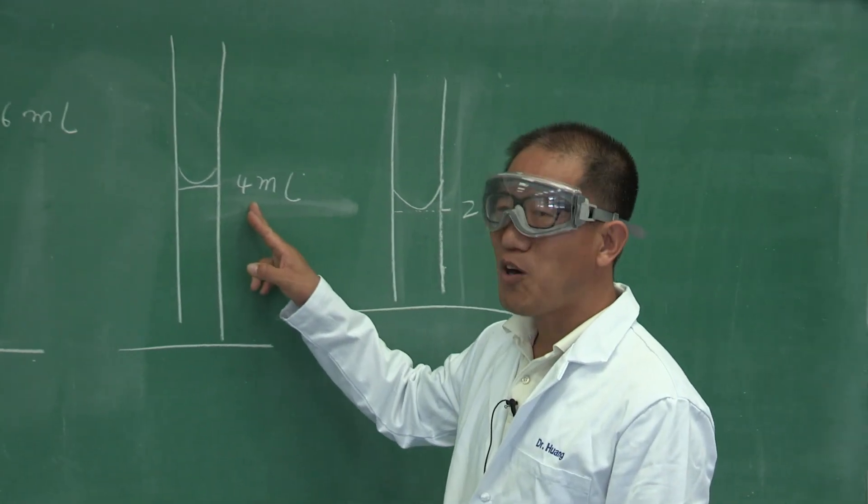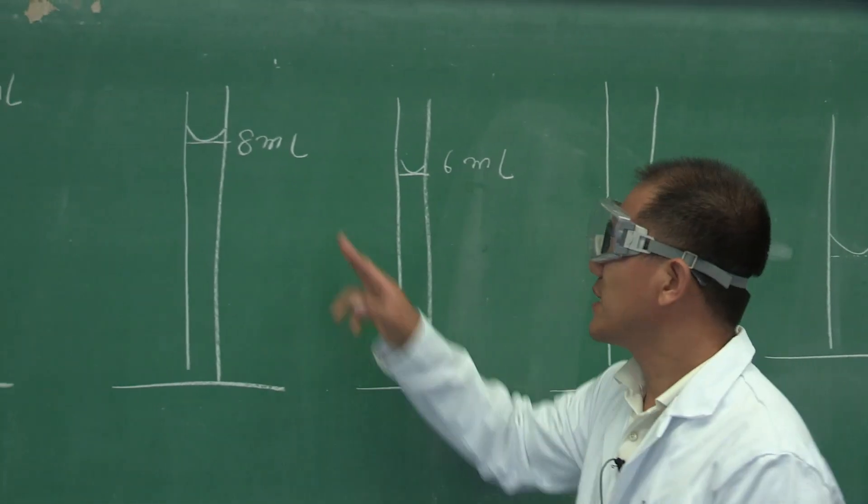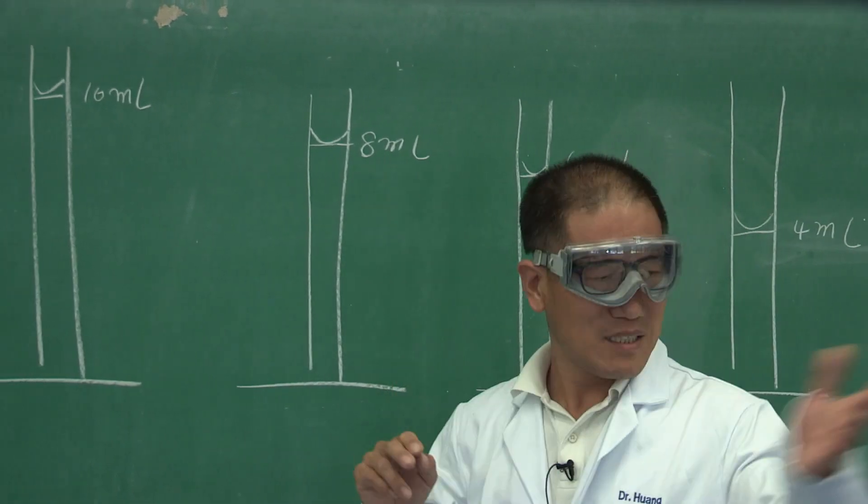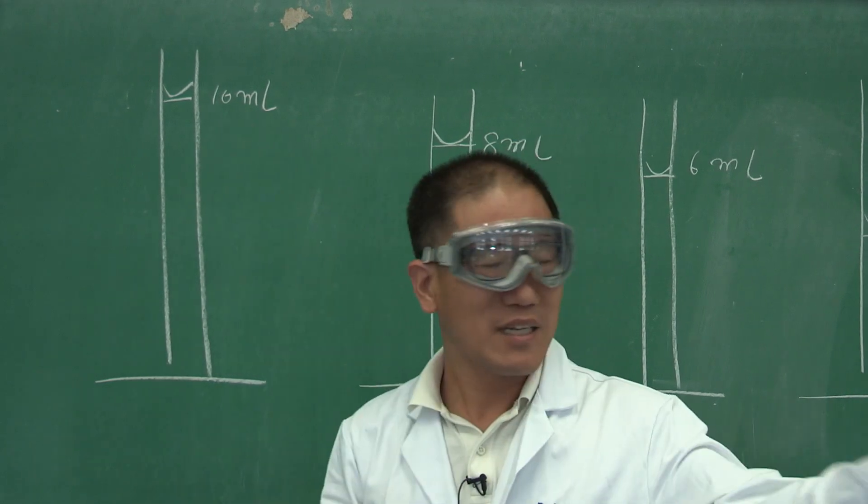Add to 4 milliliter mark, get the mass. 6 milliliter mark, get the mass. 8 milliliter. And then, get the mass. Finally, 10 milliliter mark, get the mass.